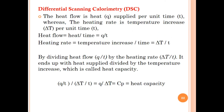Heat flow is the heat supplied per unit time t, while the heating rate is the temperature increase delta T per unit time. Heat flow equals q over t, where q is heat and t is time. Heating rate equals delta T over t. By dividing heat flow q by the heating rate delta T over t, the result is heat supplied divided by temperature increase, which is the heat capacity. So heat capacity Cp = q / delta T.